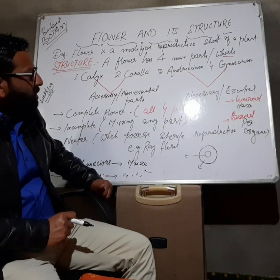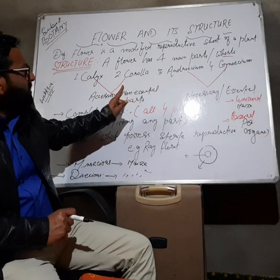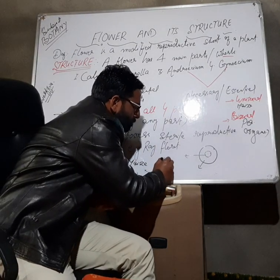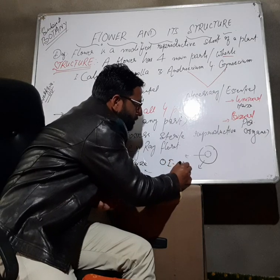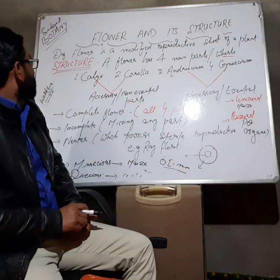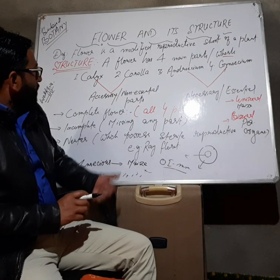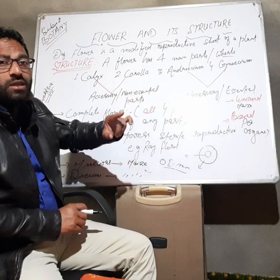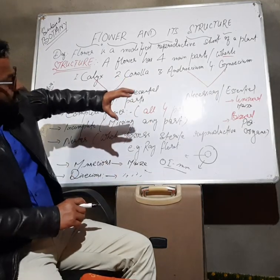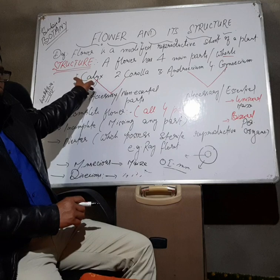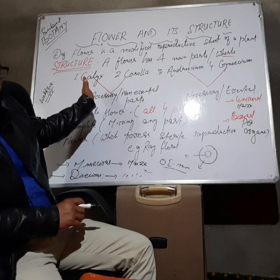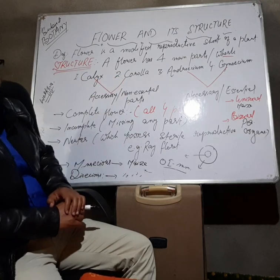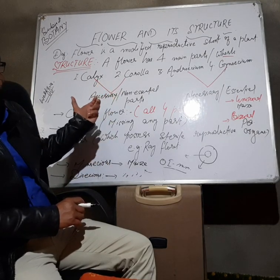Lastly, remember one point: the smallest flower is Wolffia, which is 0.1 to 1 mm in size. Wolffia is the smallest flower of angiosperms — it is a rootless and aquatic plant. Rafflesia is the largest flower.